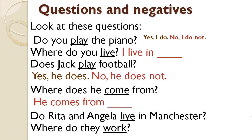Do Rita and Angela live in Manchester? Remember that Rita is a singular noun and Angela is also a singular noun, but both are connected by 'and,' so they are two — plural. That's why we use 'do.' You can use 'do' with plural pronouns: they, or Angela and Rita. But when we use Jack, that's why we use 'does' — does with singular nouns and do with plural nouns. So play, live, come, and work are all infinitive verbs, because they don't have S, ES, or IES.